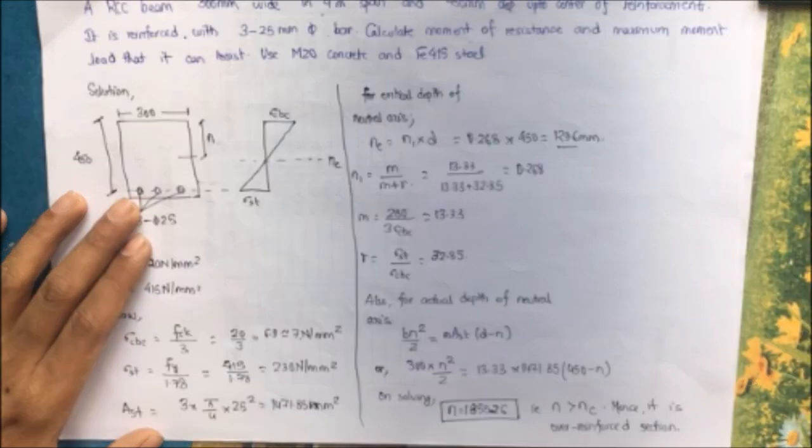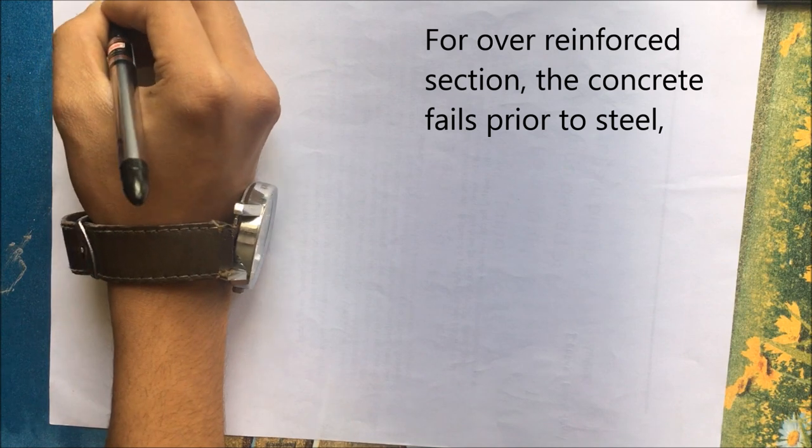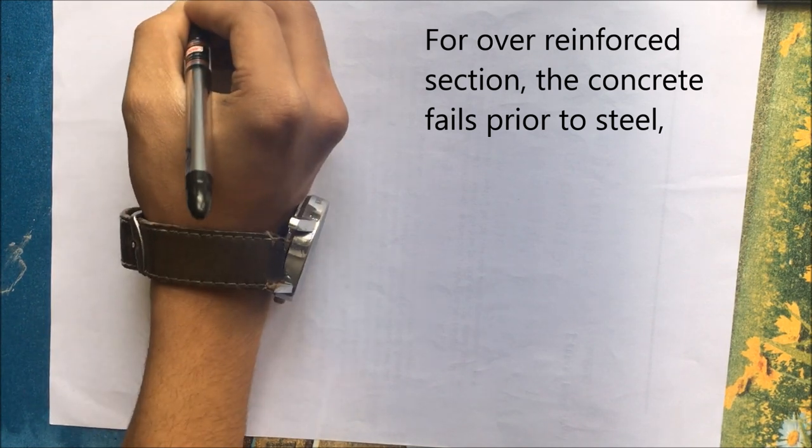The depth of neutral axis was found as 129.6mm and we find that the actual depth of neutral axis is greater than that of the critical depth of neutral axis. Hence it is an over-reinforced section.